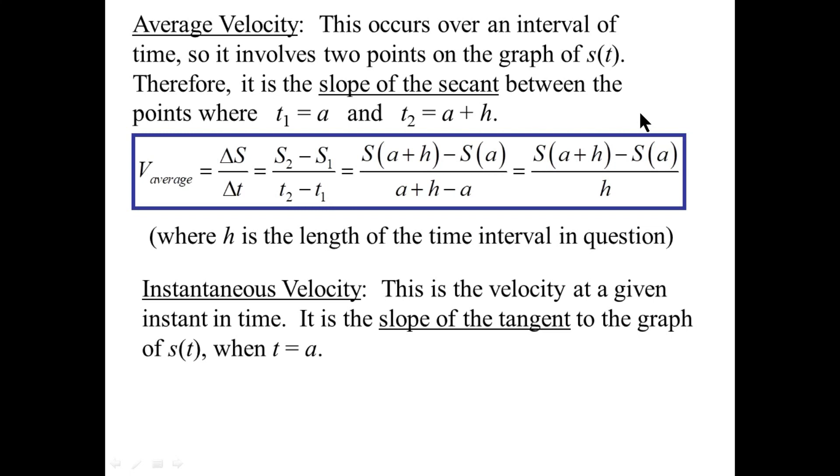Instantaneous velocity, on the other hand, is from our p-q diagram in the previous video. q has slid along the curve and sits atop p, so we will take the limit for instantaneous velocity, because it's the slope of the tangent to the graph when t equals a.